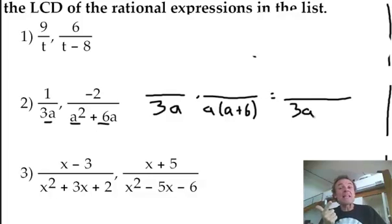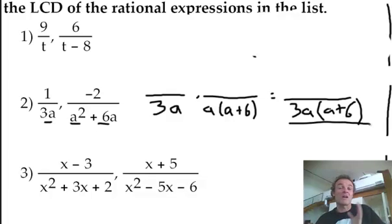So I've got a three. I've got an A in each one, but I can only pick one A. I'm not going to write two A's, which makes A squared, because there isn't an A squared. So I'll just pick one of them, it doesn't matter which one, and also there's an A plus six that I can see. So that there is the answer. That's the lowest common denominator right there.